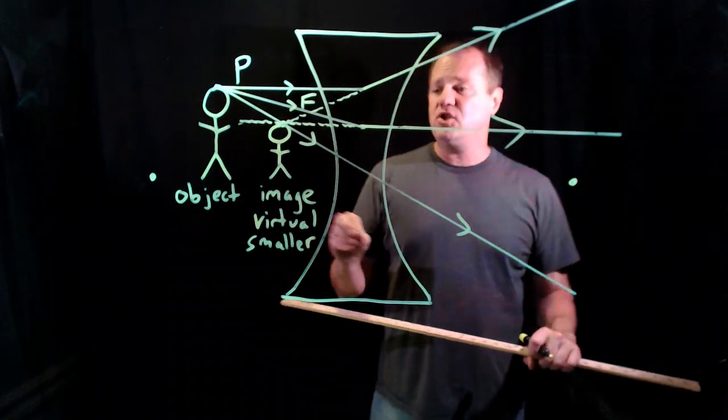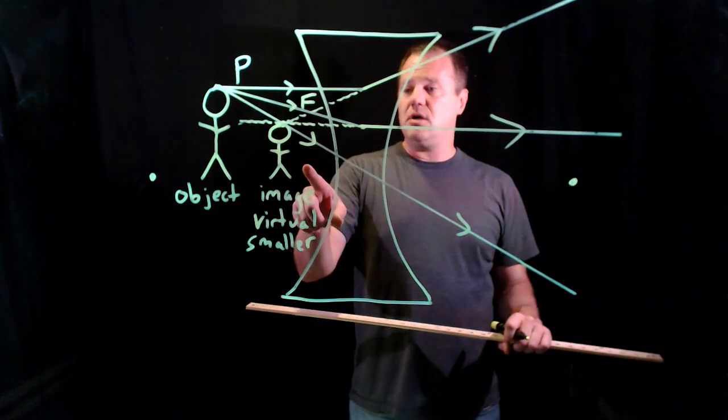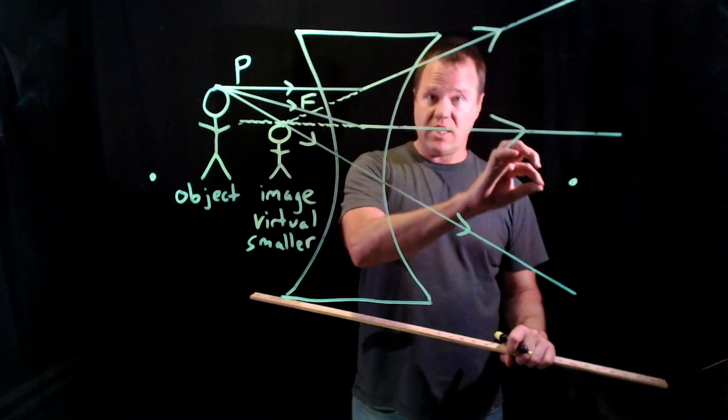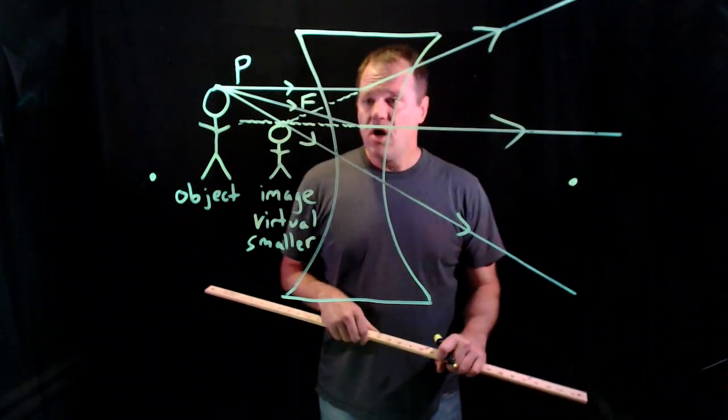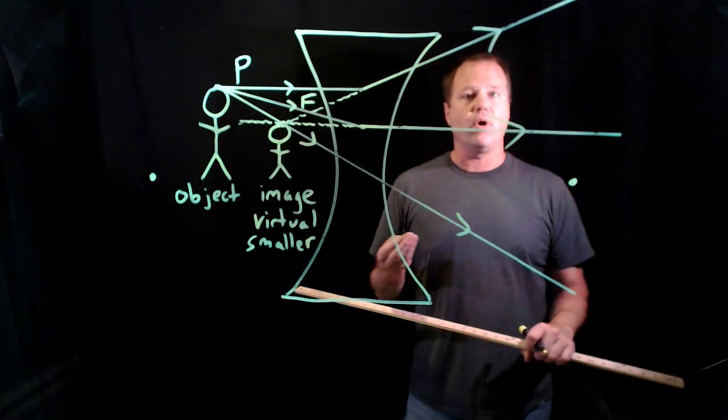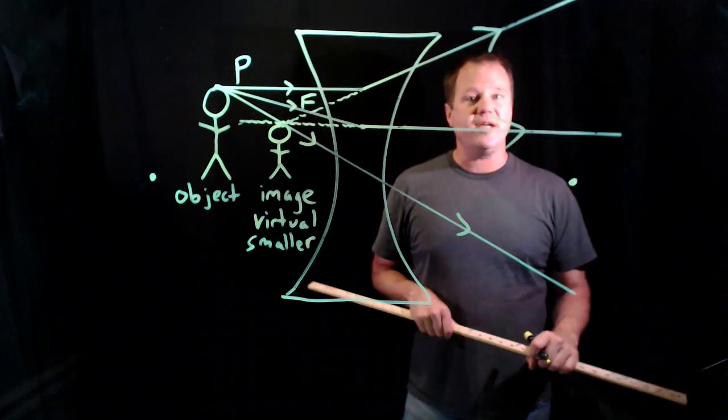And remember, by convention, this image distance for the virtual images is going to be negative, just like the focal lengths are also negative. So I've shown you how to do principal ray diagram for a biconvex lens. Thanks for watching.